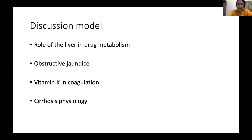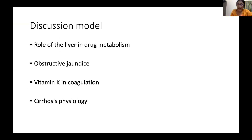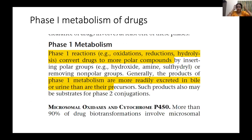The role of the liver in drug metabolism, how the normal physiology of the liver gets affected in obstructive jaundice, the role of vitamin K having discussed coagulation, and how normal physiology is changed in cirrhosis. When we talk about drug metabolism in the final years, students sit for their viva and there is a lot of phase one and phase two metabolism which is spoken about.